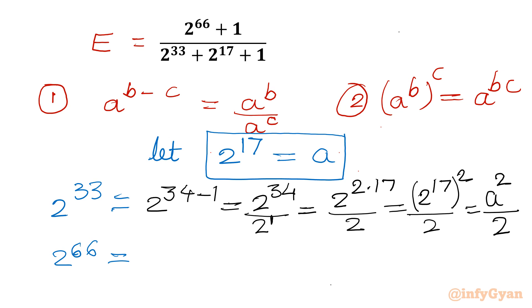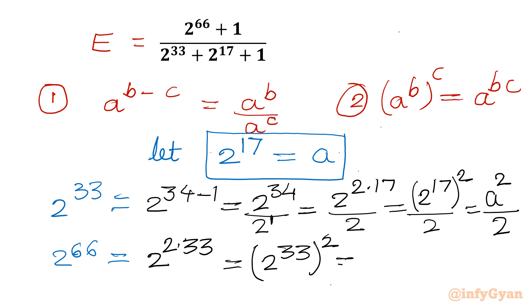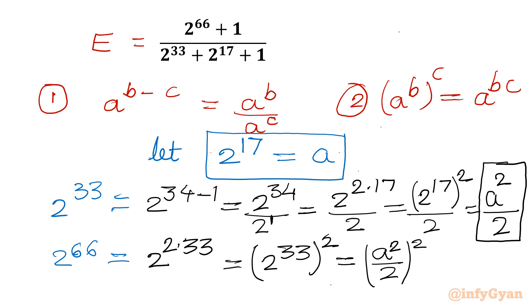Similarly I will calculate 2^66 in terms of a. So 2^66 = 2^(2×33) = (2^33)² = (a²/2)² = a⁴ / 4. Let us plug in these values in our expression.